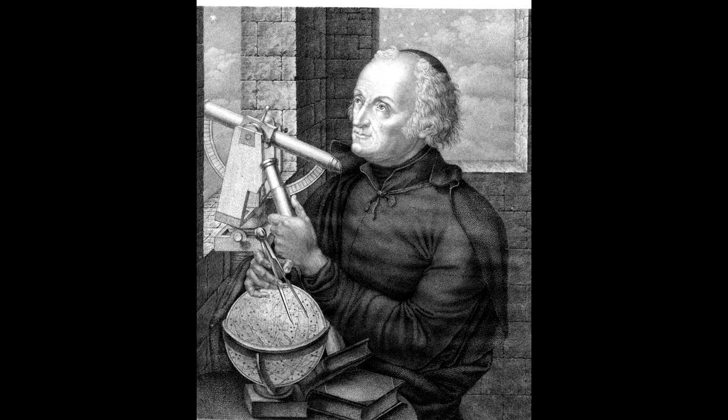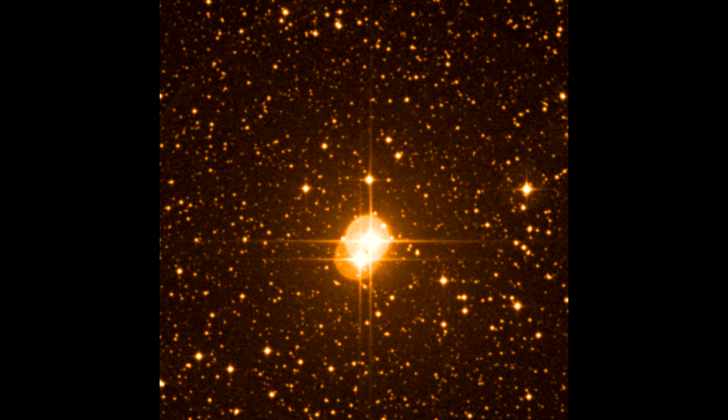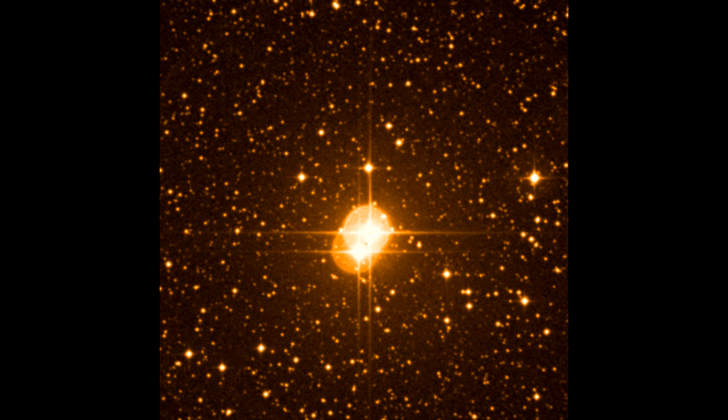In 1792 Giuseppe Piazzi noticed the high proper motion when he compared his own observations of 61 Cygni with those of Bradley made 40 years earlier.